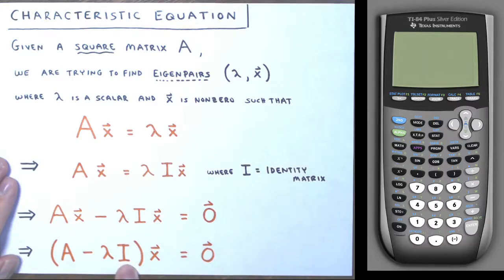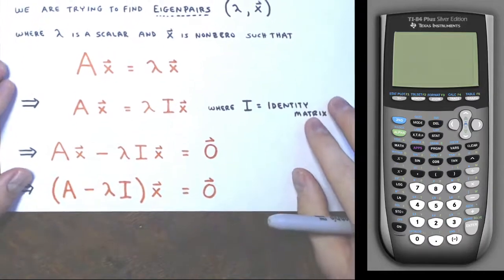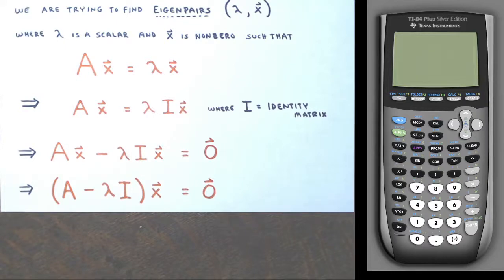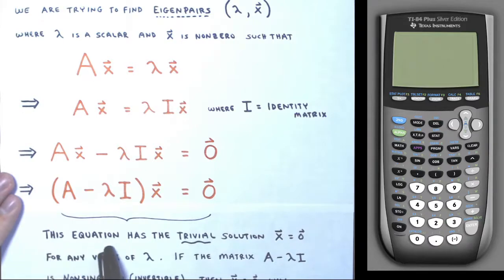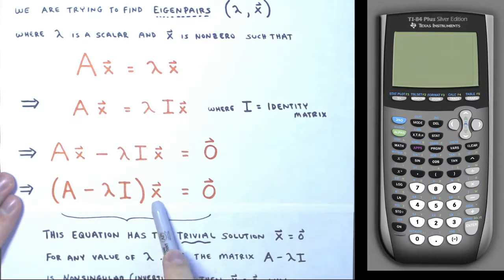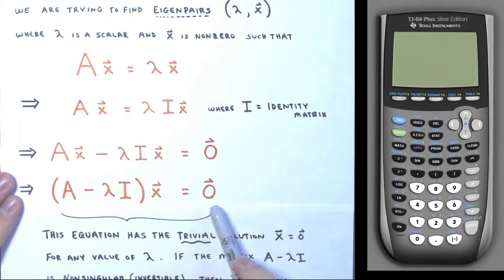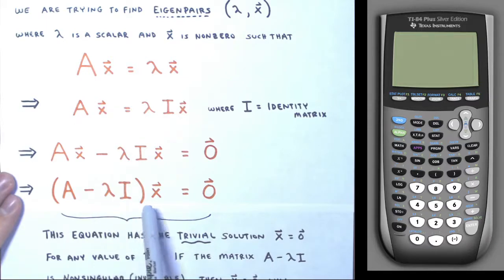Now you can see why the identity matrix was introduced — so that this subtraction is defined, since A and λI are both square matrices of the same size. This equation always has at least the trivial solution x = 0 for any value of lambda, because anything times the zero vector gives the zero vector.